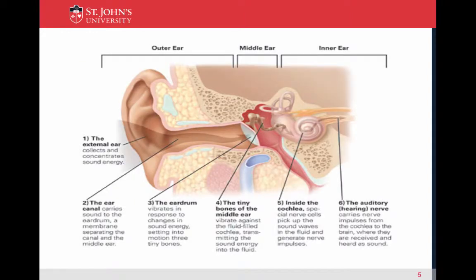The outer ear consists of your pinna and your ear canal. The middle ear is your eardrum, and it terminates at your cochlea. The cochlea is your hearing organ, along with the auditory nerve, which make up the inner ear.